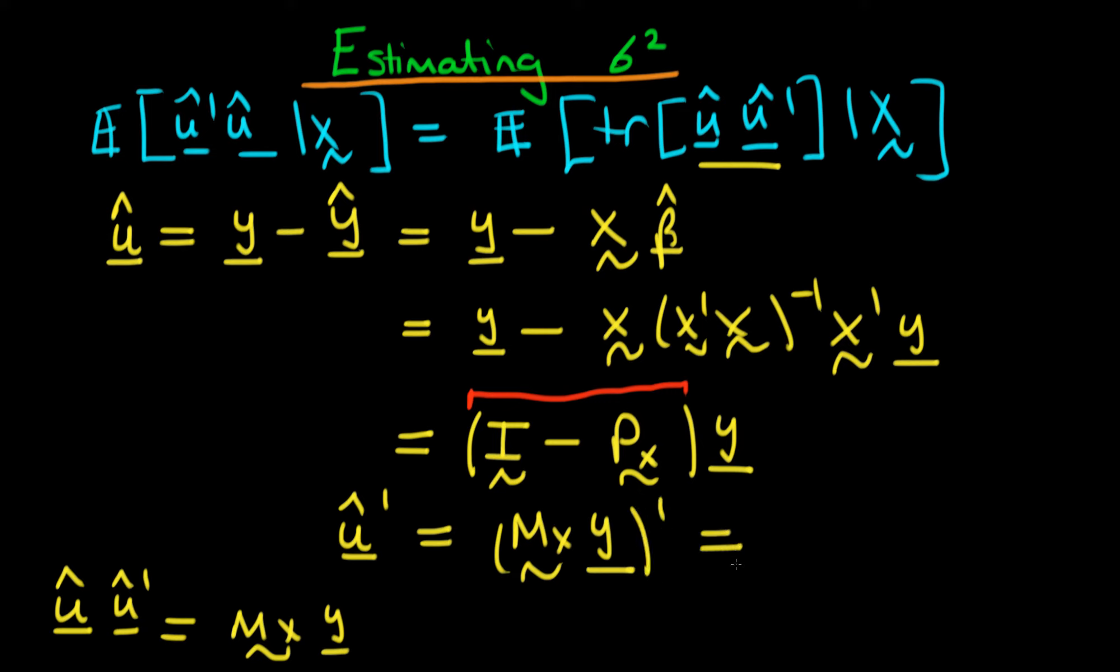When you take the transpose of a product, it is the same thing as the individual transposes in reverse order then multiplied. So it's actually y primed times Mx primed. So then we have that this is equal to y primed times Mx primed.